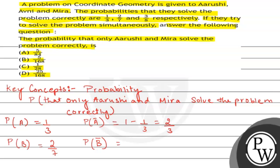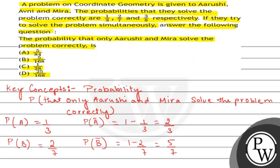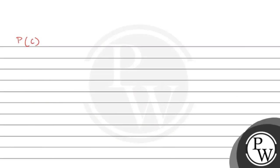The probability that Avani does NOT solve the problem correctly is 1 minus 2/7, which equals 5/7. Similarly, the probability of Mira solving the problem correctly is P(C) = 3/8. The probability that Mira does NOT solve the problem correctly is 1 minus 3/8, which equals 5/8.